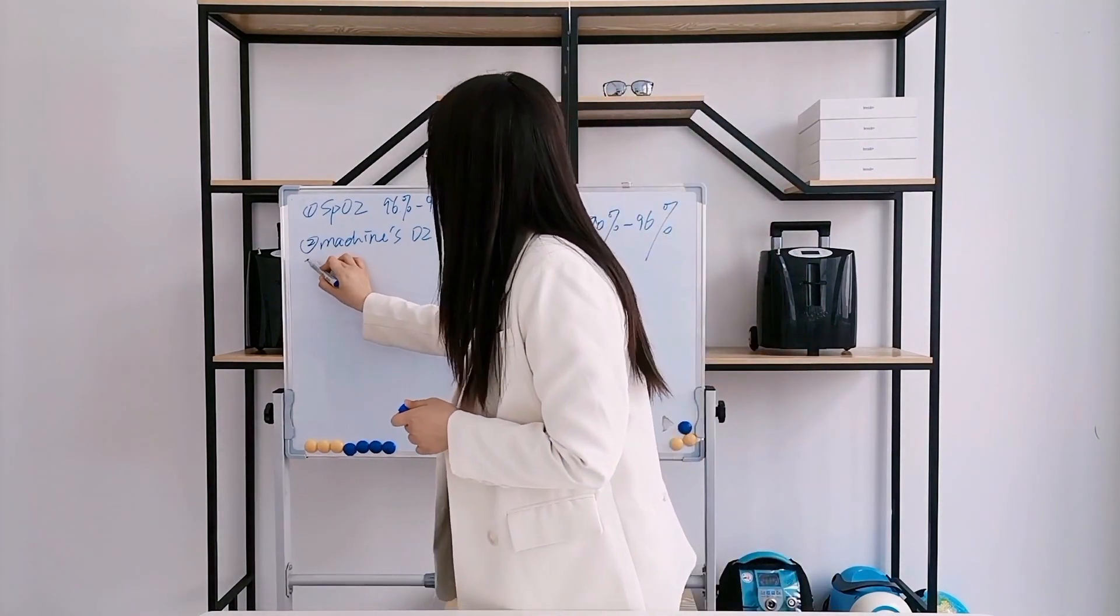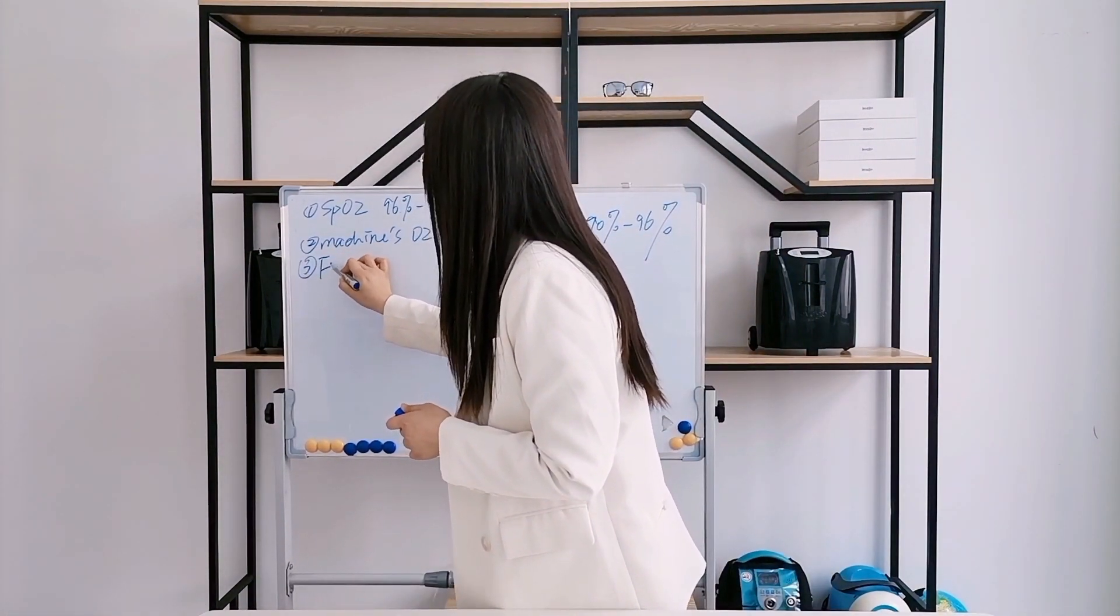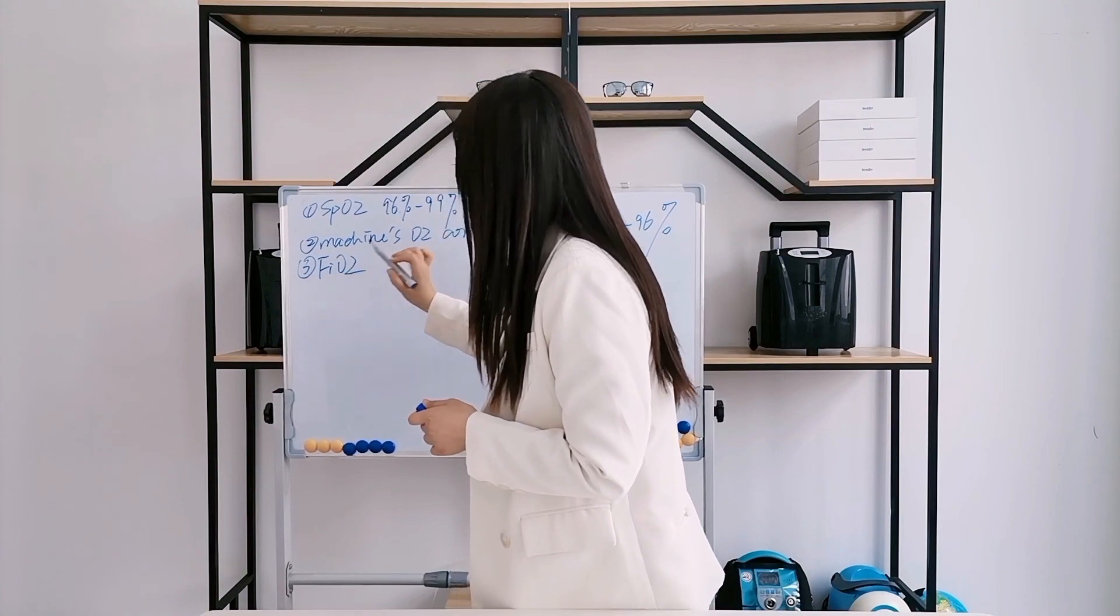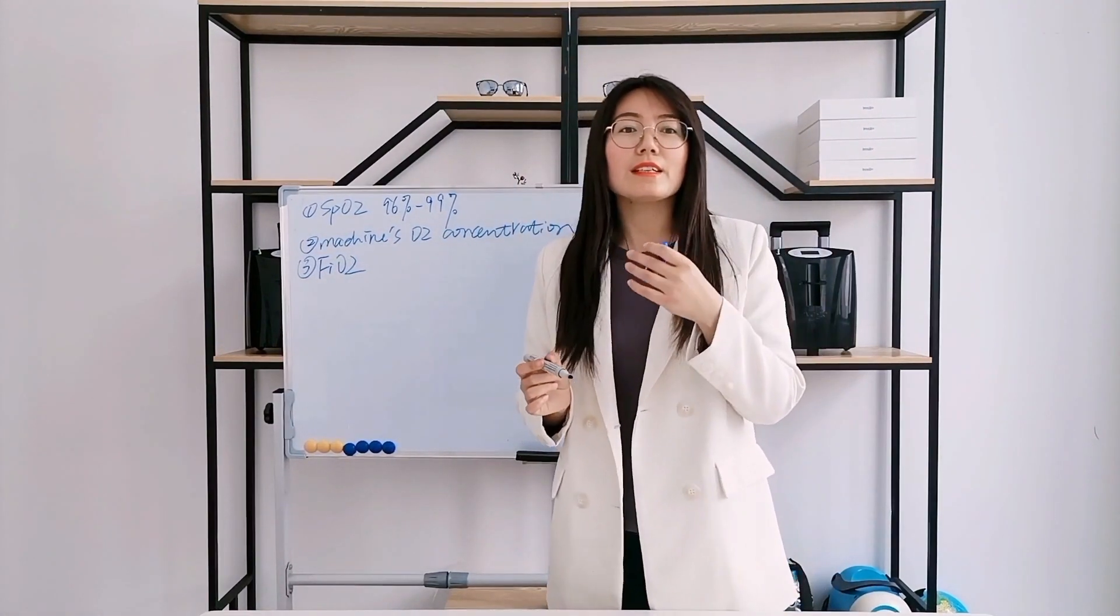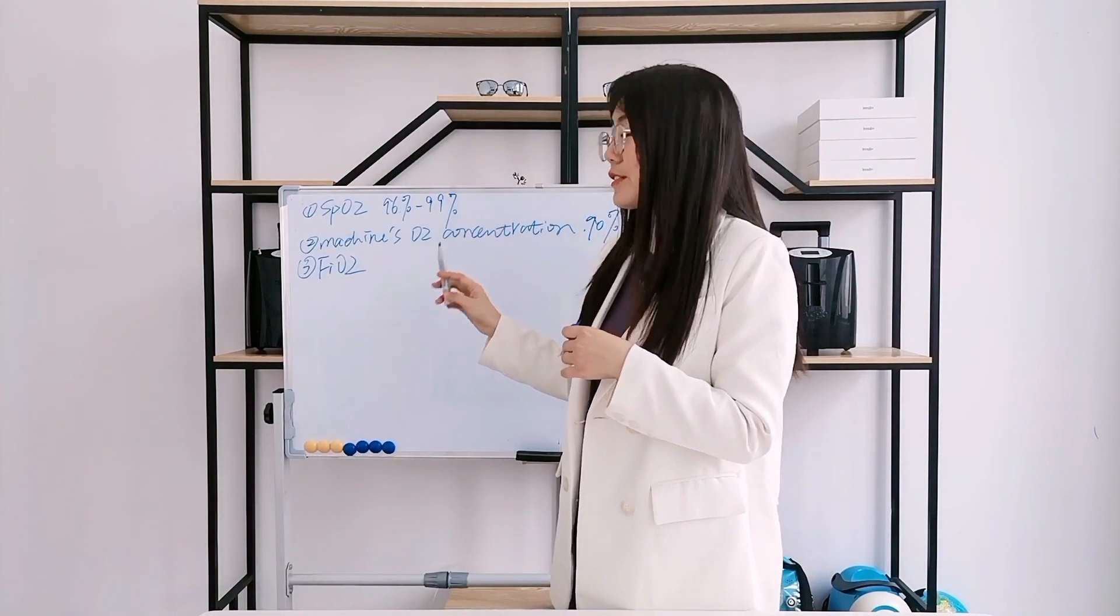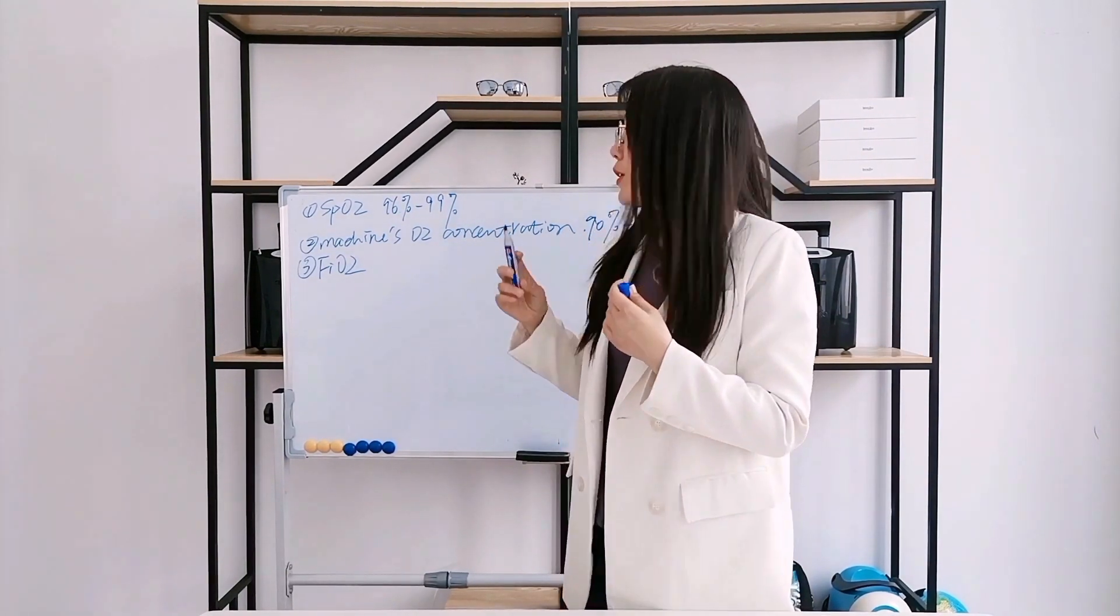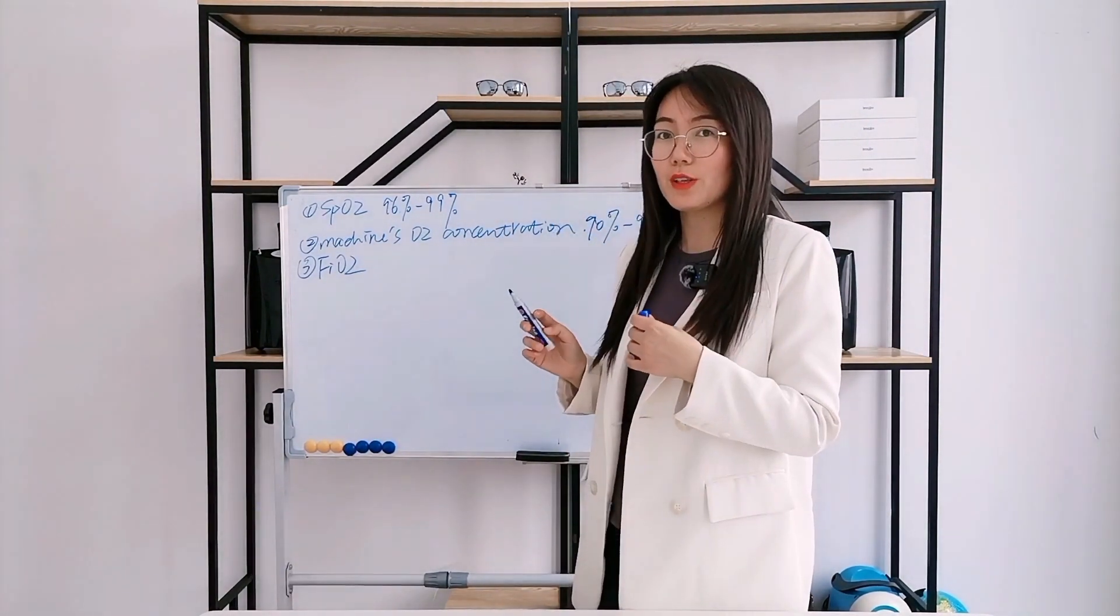The third one is the fraction of inspired O2. Usually, we call it FiO2. It is an estimation of the oxygen content a person inhales. We have a formula to calculate it.